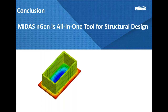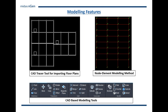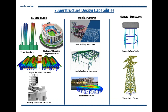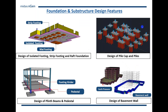In summary: we performed analysis, design, drawings, and reports for an underground water tank. Midas Engine has several modeling features for different structure types. General structures such as elevated water tanks and transmission towers can be created, analyzed, and designed. RC and steel structures can also be analyzed and designed. All types of foundations are within the software — no need for separate software for superstructure and foundation; both superstructure, substructure, and foundation can be done in one solution.